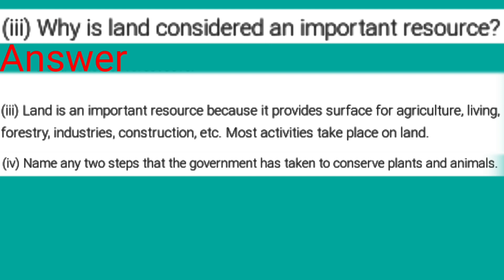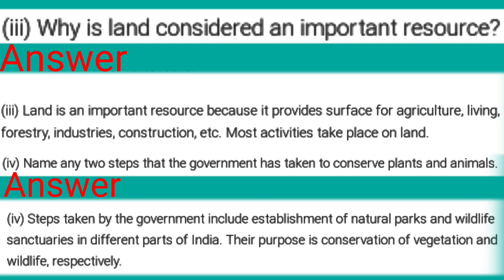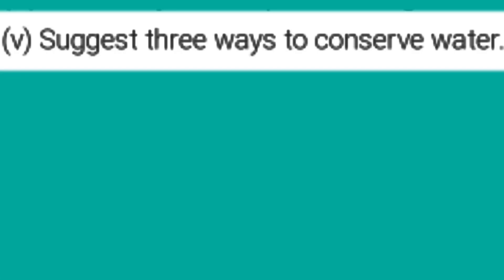Fourth: Name any two steps that the government has taken to conserve plants and animals. Answer: Steps taken by the government include establishing national parks and wildlife sanctuaries scattered in different parts of India. Their purpose is conservation of vegetation and wildlife respectively.